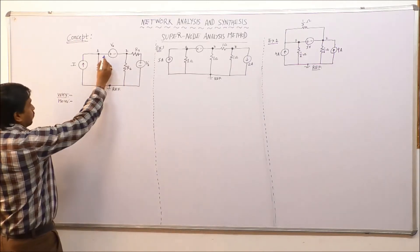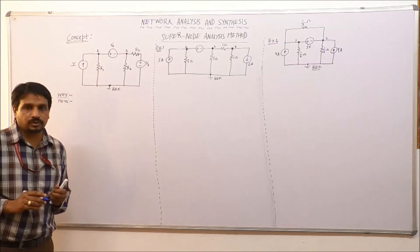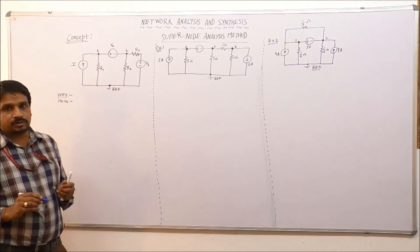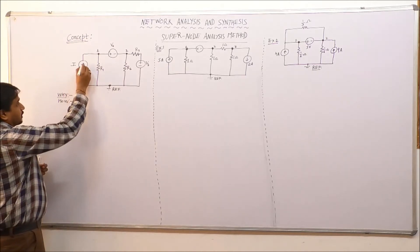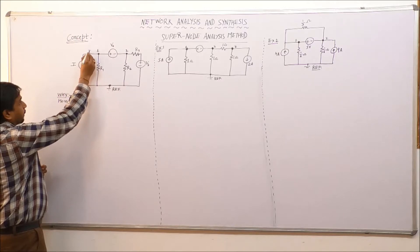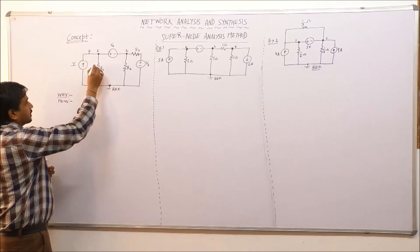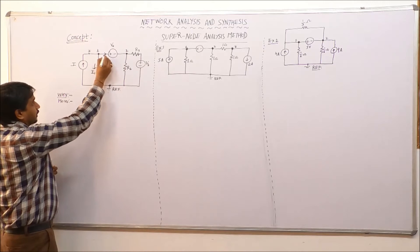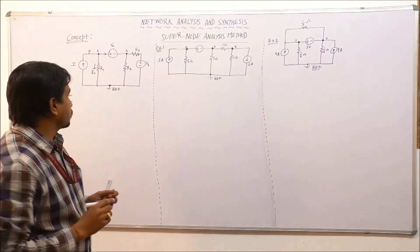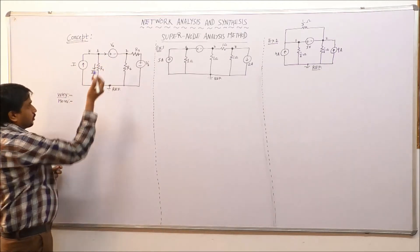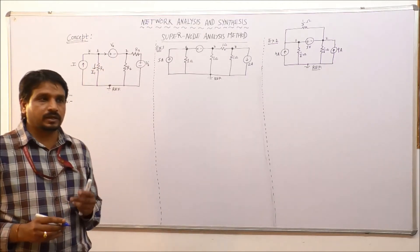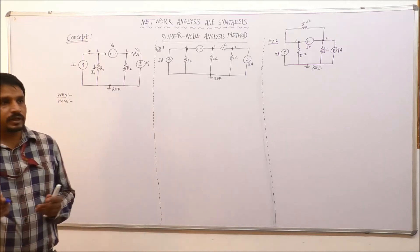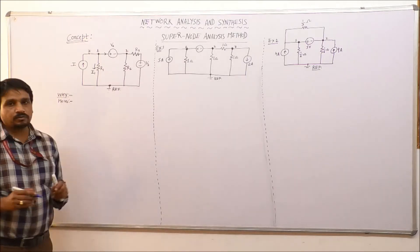Now if I try to write the KCL equations for node 1 and node 2 as required in nodal analysis, I need to write the current flowing in each and every branch. For the current source branch, this current is simply I. In the branch containing resistance R1, suppose current I1 is flowing. But if I try to find the current in the branch where the voltage source is connected, we cannot apply Ohm's law or any other method to determine that current between node 1 and 2. So it is very difficult to apply the ordinary nodal analysis method to this kind of network.